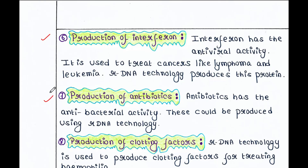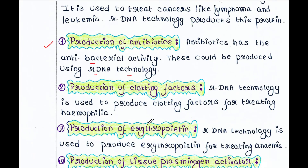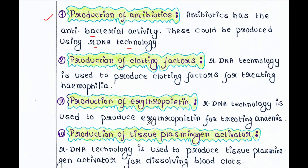Next is production of antibiotics. Antibiotics have antibacterial activity and can be produced using rDNA technology. You can clone the gene which will produce antibiotics, then extract those antibiotics and use them in treatment.